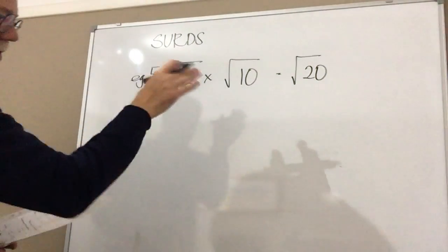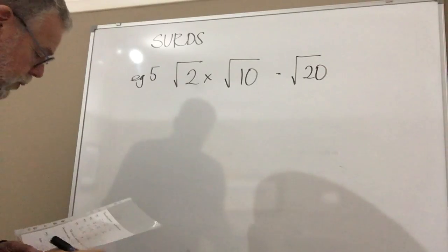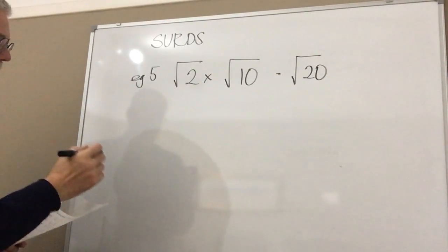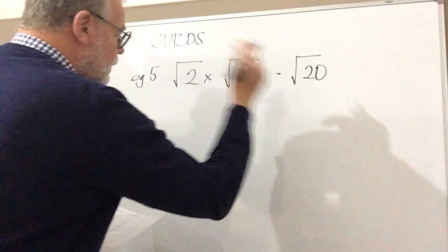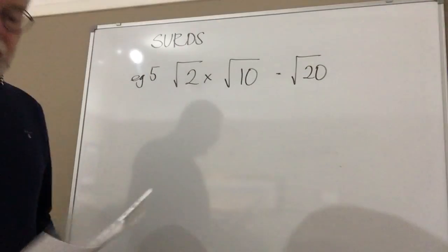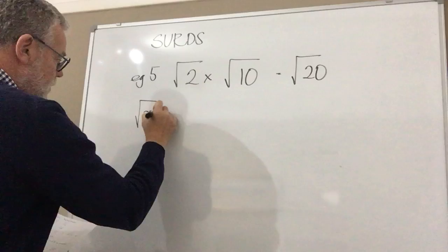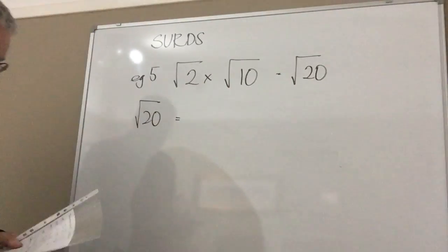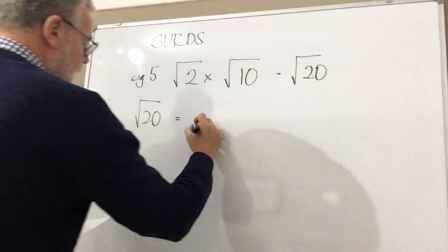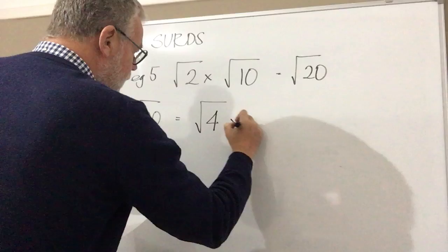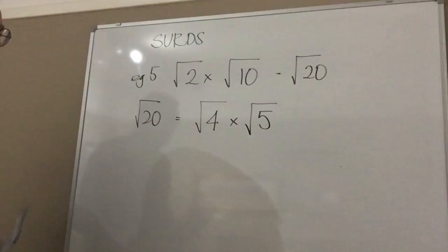Because we can actually simplify root 20. Now how do we do it? Well we've got to look for square numbers. In other words, let me show you. So if I had root 20, I could actually write it like this couldn't I? I could write it as root 4 times by root 5.